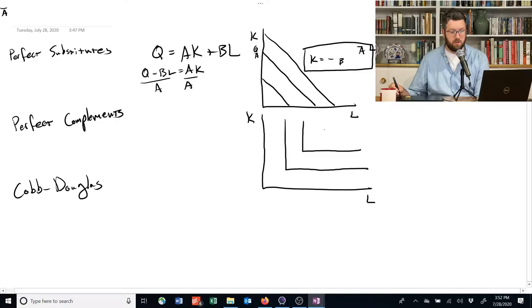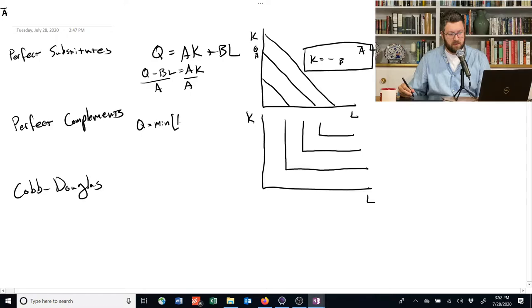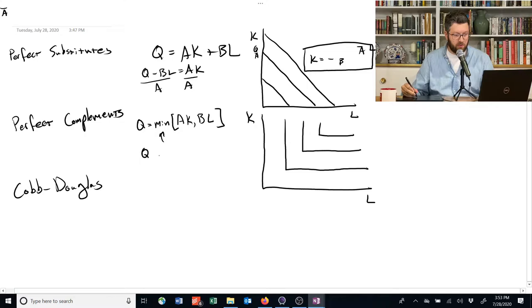So this means as we go in this direction, we have more, and they have this kind of hard edge to them. So what is a perfect complement? Well, the function for this looks like this. Q is equal to the minimum, so this is a new function called the min, of a times k or b times l.